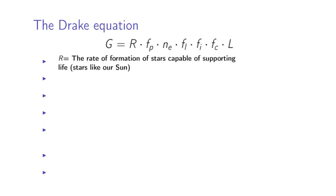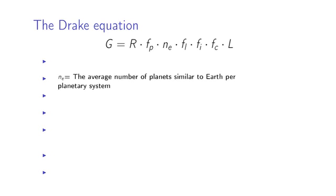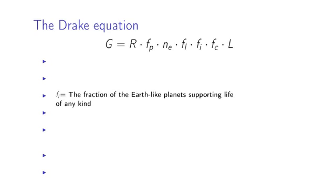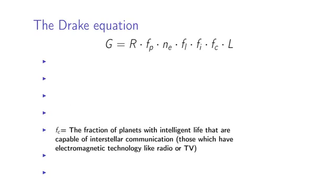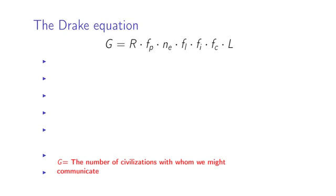So he first worked out the rate of formation of stars capable of supporting planets, the fraction of those stars with planets, the average number of those planets that are Earth-like, so you don't want gaseous planets like Saturn, the fraction of Earth-like planets that can support any kind of life, the fraction of those planets that can support intelligent life, the fraction of those planets with intelligent life that could have TV, radio, capable of interstellar communication. And you get to G, which is the number of intelligent civilizations capable of interstellar communication.